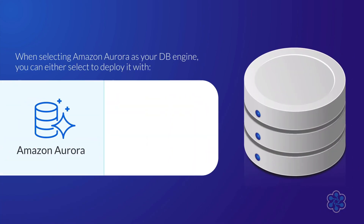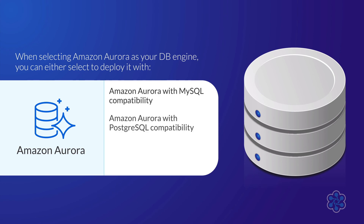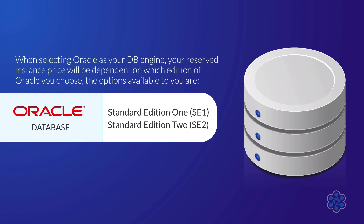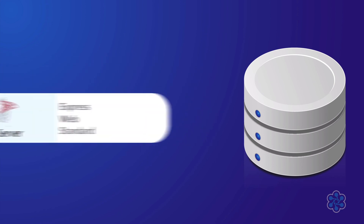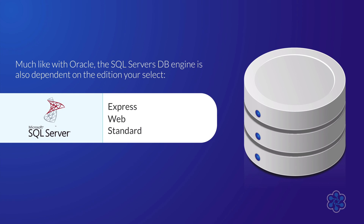Much like the on-demand pricing, there are some additional deployment options when using reserved instances. For Amazon Aurora, you can either deploy it with Amazon Aurora with MySQL compatibility or Amazon Aurora with PostgreSQL compatibility, and each of these options have a different price for the reserved instances. For Oracle, your reserved instance price will again be dependent on the edition of Oracle you choose, either Standard Edition 1 or Standard Edition 2. For SQL Server, the database engine is also dependent on the edition you select — Express, Web, or Standard — and each of these options will offer different reserved instance prices.